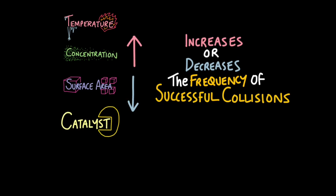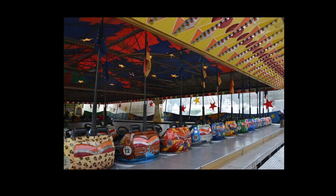This is really important — remember these words: frequency of successful collisions. To help understand this idea, imagine a dodgem ring with cars randomly moving around. You know they will collide with each other, but certain factors may affect how frequently they collide. The key idea is that they're not being operated by us — they're just randomly moving around.